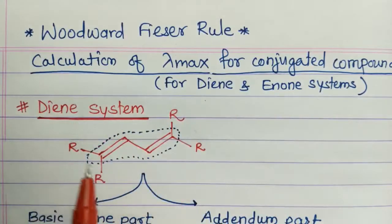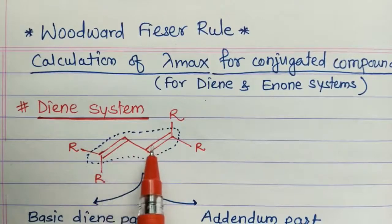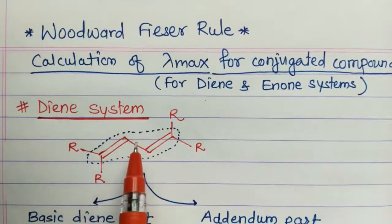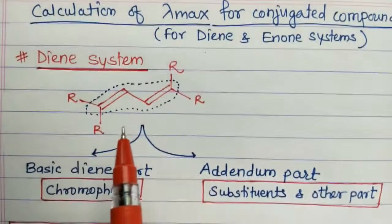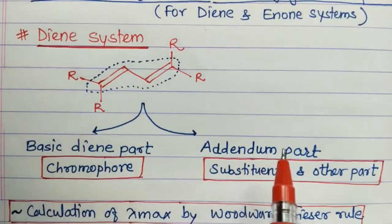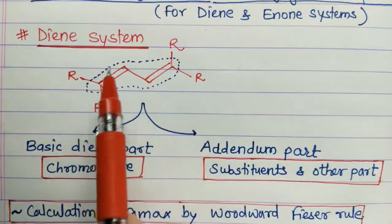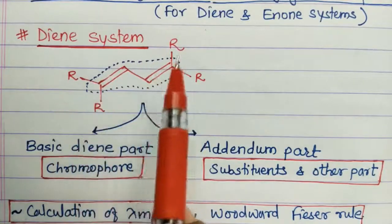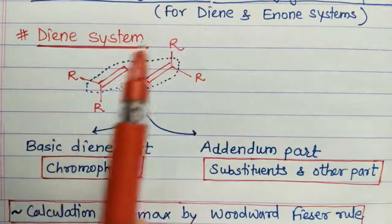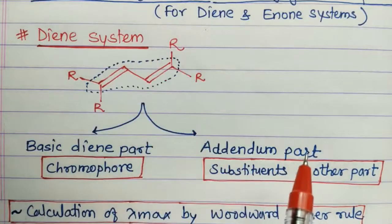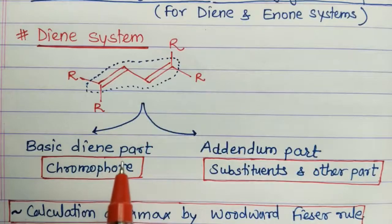Let's start with the diene system. We have a diene here — two conjugated carbon-carbon double bonds, which is why it's called a diene. This diene system is divided into two parts: the basic diene part, which acts as a chromophore and does not count substituents, and the addendum part, which includes the R groups or substituents that must be added to the basic diene value during calculations.